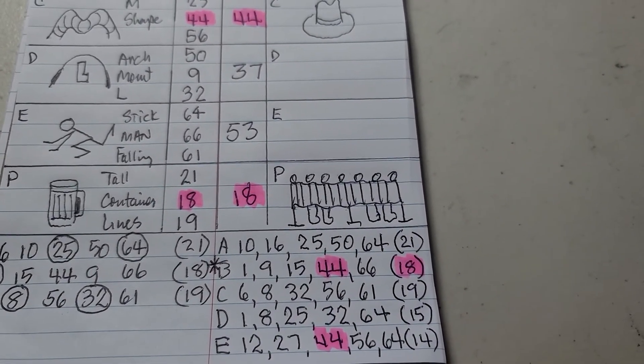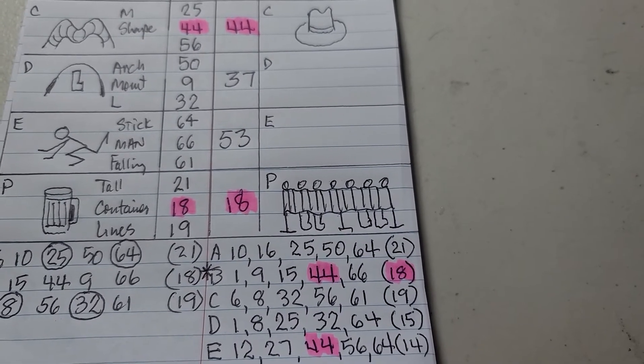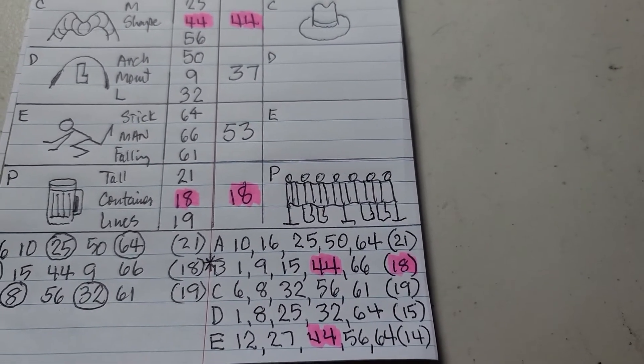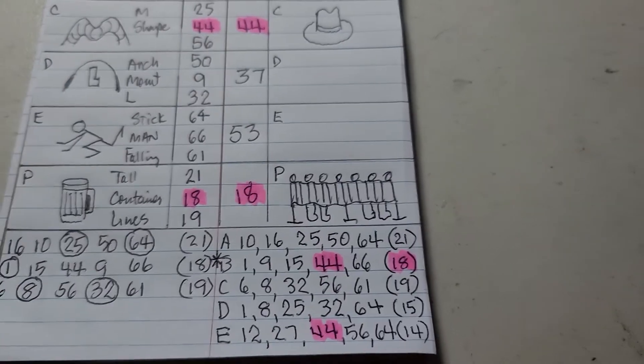So for hitting 44 and 18 on the same ticket, we got a four dollar win. Woohoo, break the bank.